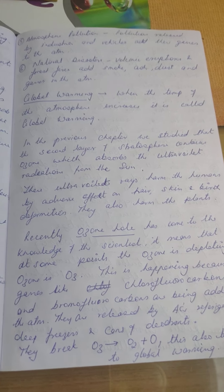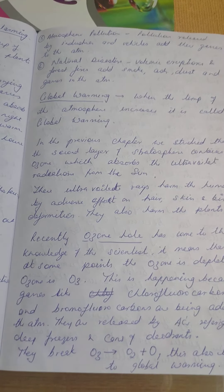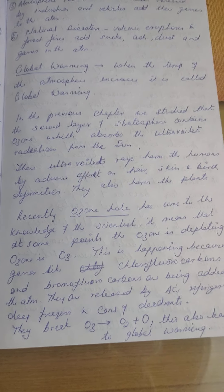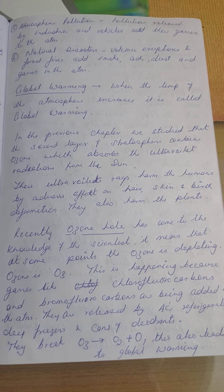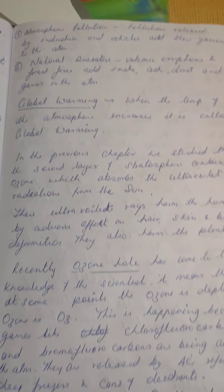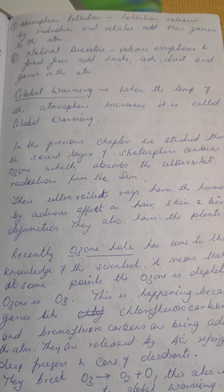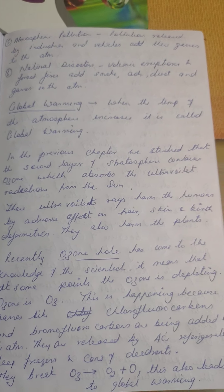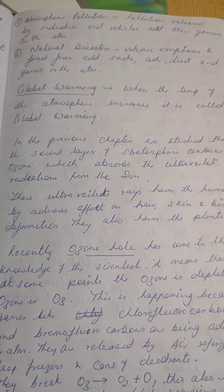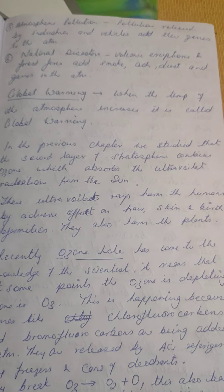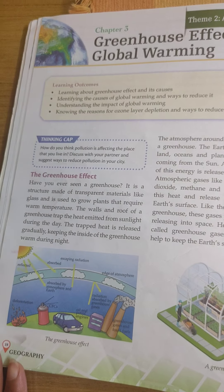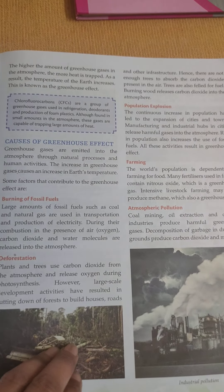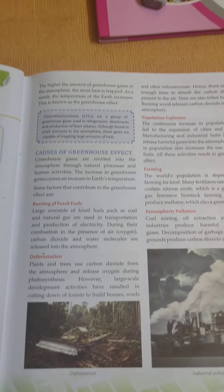This allows ultraviolet radiations to reach the surface of the earth, also causing a lot of global warming. These are the reasons why global warming is occurring. In the next video, we will discuss the impacts of global warming and how it can be reduced. Go through this video, and I'll be sending along the first three to four pages of your book for reading.